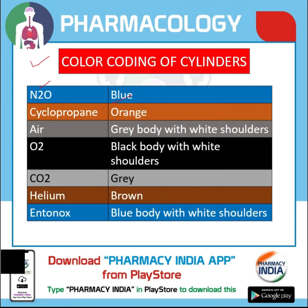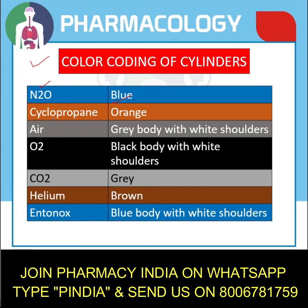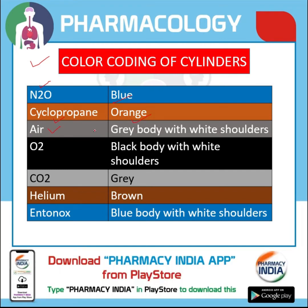Cyclopropane is filled in orange cylinders, and air is filled in gray body with white shoulder cylinders. Oxygen is filled in black body with white shoulder cylinders, and carbon dioxide is filled in gray cylinders.